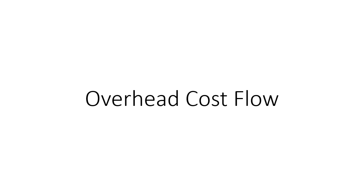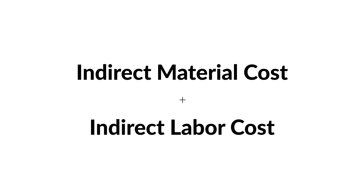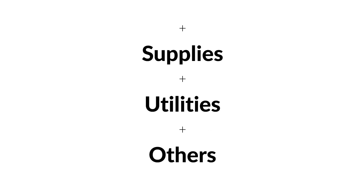With that information, we know overhead costs include indirect material costs and indirect labor costs, and other costs such as supplies, utilities, and others like factory depreciation. Indirect labor and indirect material does not constitute the entire overhead, although it might, but it's highly unlikely. We also have other costs like supplies, utilities, and et cetera.